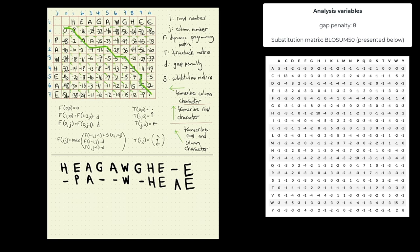That is the best possible alignment of these two sequences, given our gap penalty and substitution matrix. If we used different values for the gap penalty or substitution matrix, we may end up with a different best alignment. The last thing we do is record the score — by definition, the score of a Needleman-Wunsch alignment is the value in the bottom-right cell, which in this case is one.